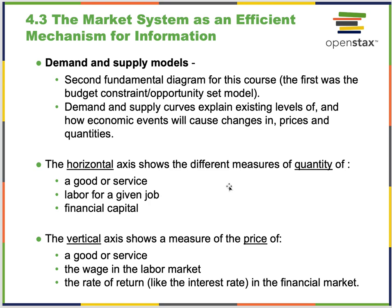The market system serves as an efficient mechanism for information. Demand and supply models — the second fundamental diagram of this course after budget constraints — explain existing levels and how economic events cause changes in prices and quantities. The horizontal axis shows quantity (of goods/services, labor, or financial capital), while the vertical axis shows the price, wage, or interest rate.